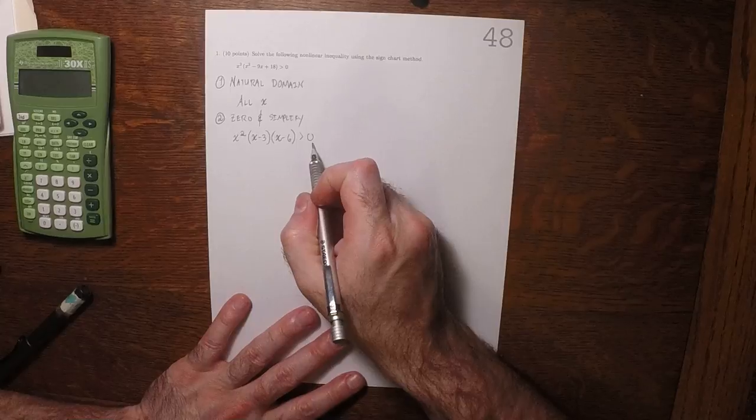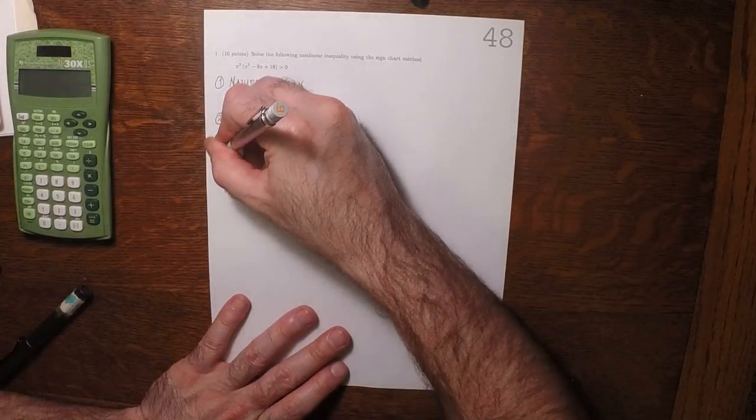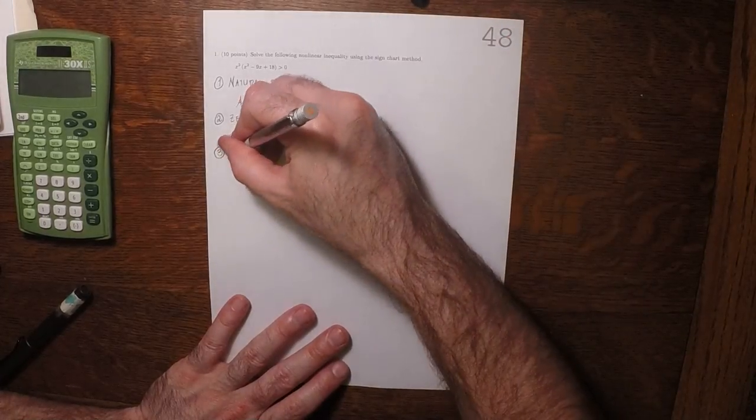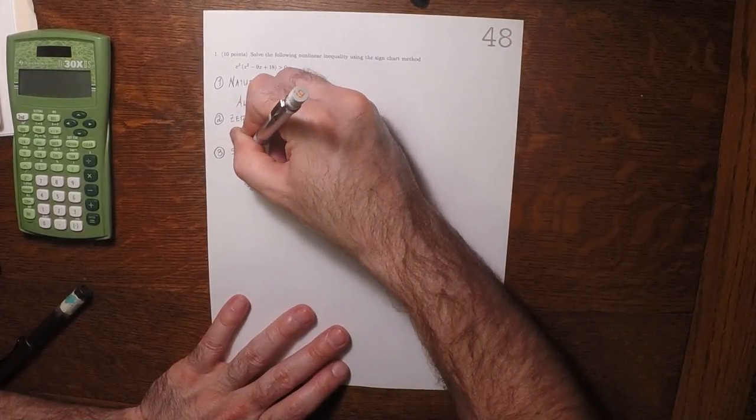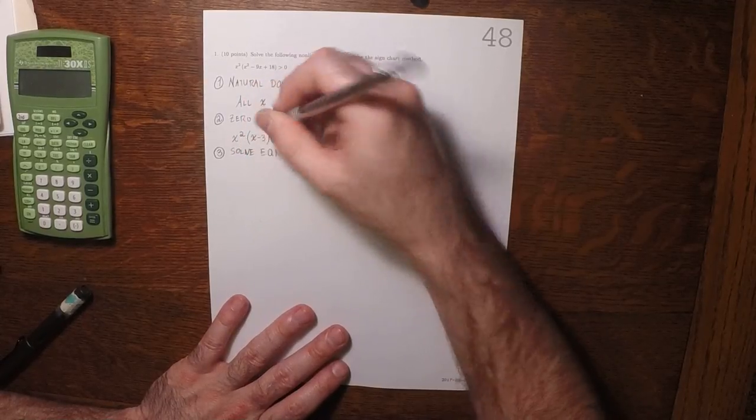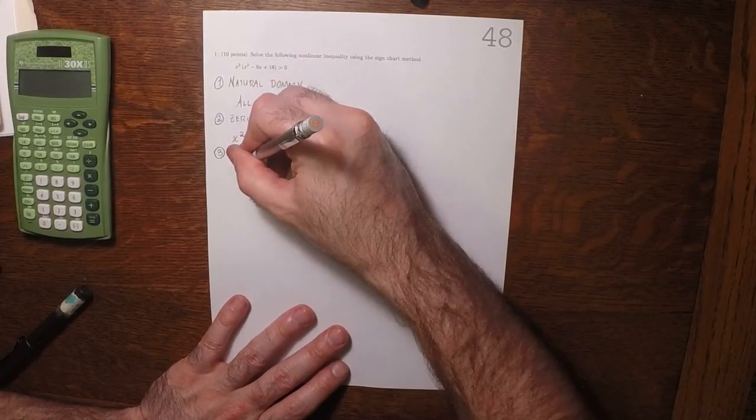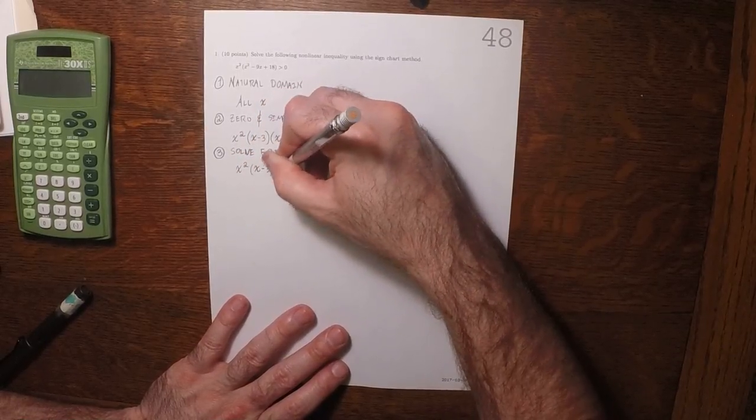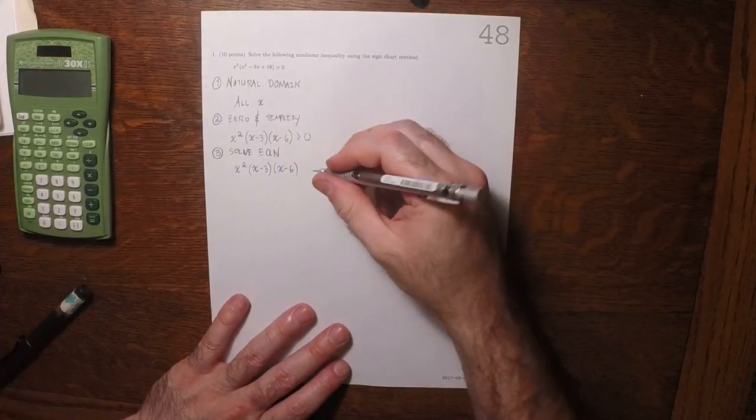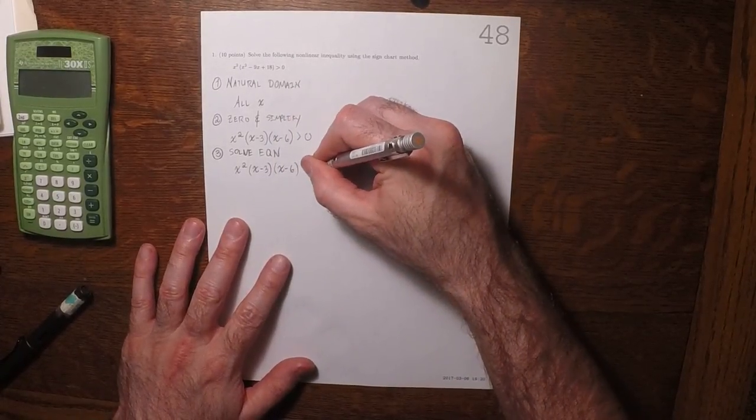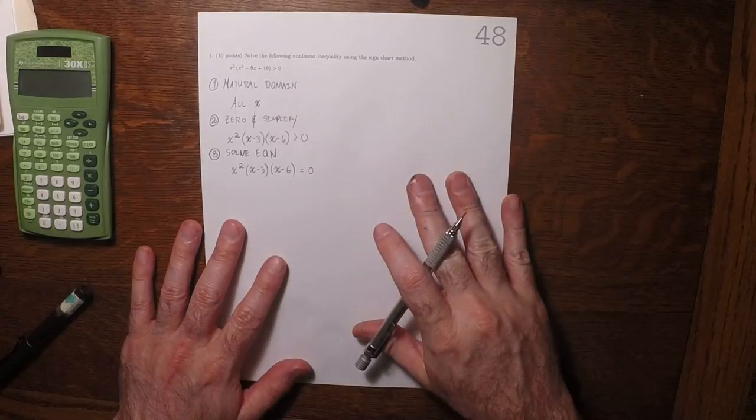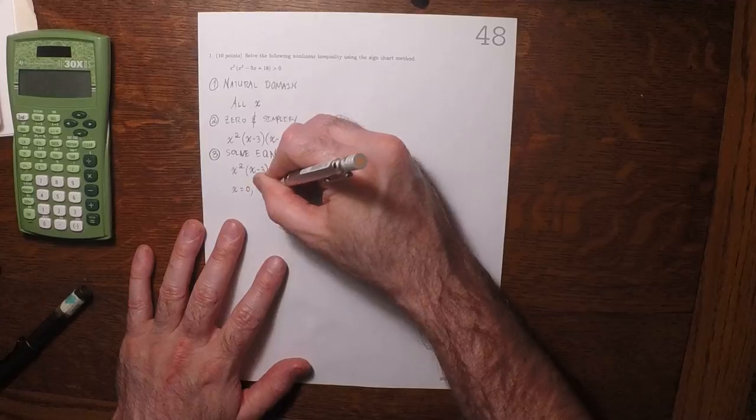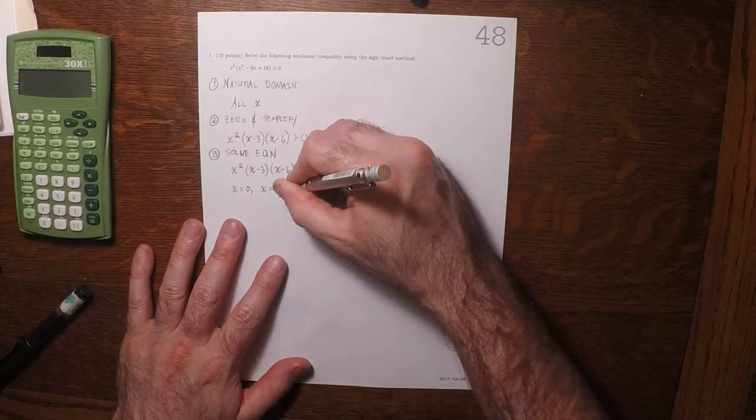One side is already 0, and that's as factored as it gets. So now 3, now we want to solve the corresponding equation. That is, we want to solve x squared times x minus 3 times x minus 6 equals 0. So the solution is x equals 0, x equals 3, x equals 6.